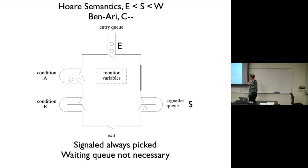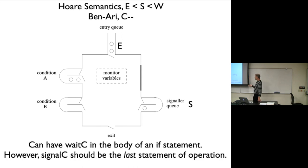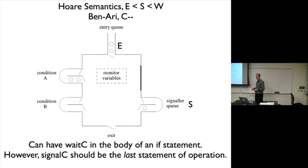To summarize Benari's Signal and Urgent Wait: signal is always picked, the waiting queue is not necessary, you can have wait(c) in the body of an if statement, and signal(c) should be the last statement of an operation. We'll revisit that in code.